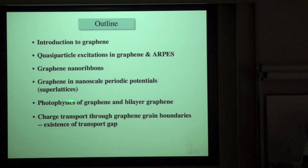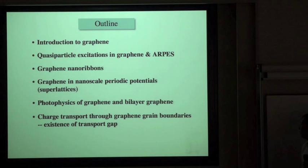We'll also look at the optical physics of graphene and bilayer graphene, which turns out to be dominated by excitons even at room temperature. And if time permits, we'll look at charge transport through graphene grain boundaries and the existence of a transport gap.